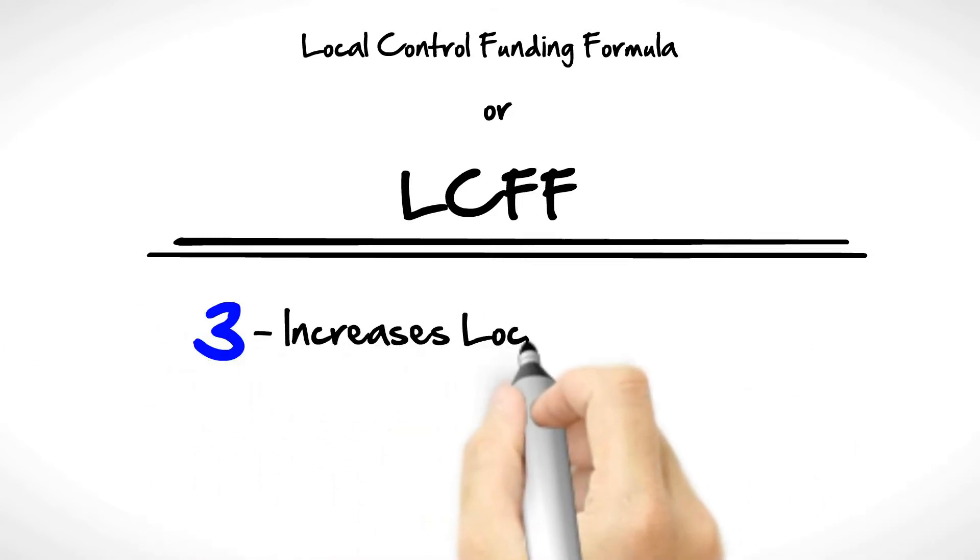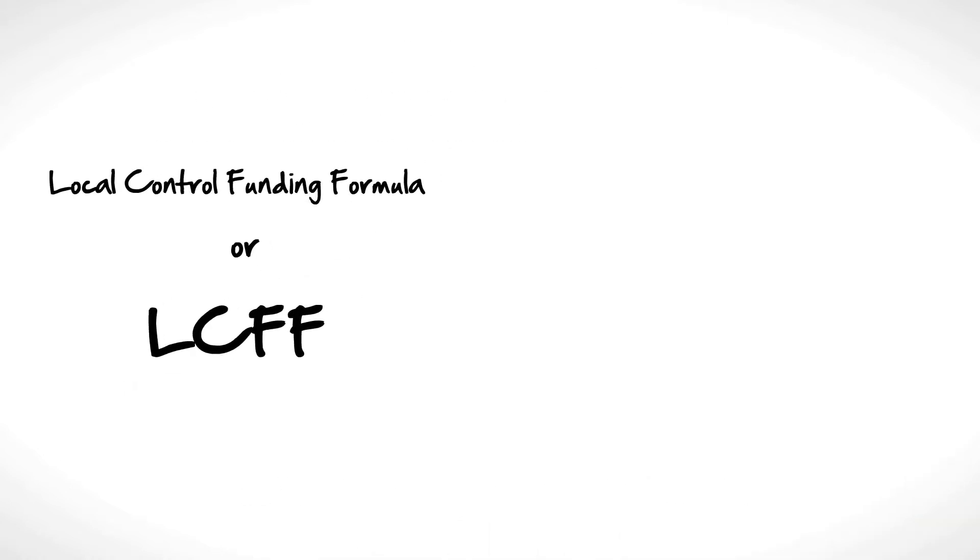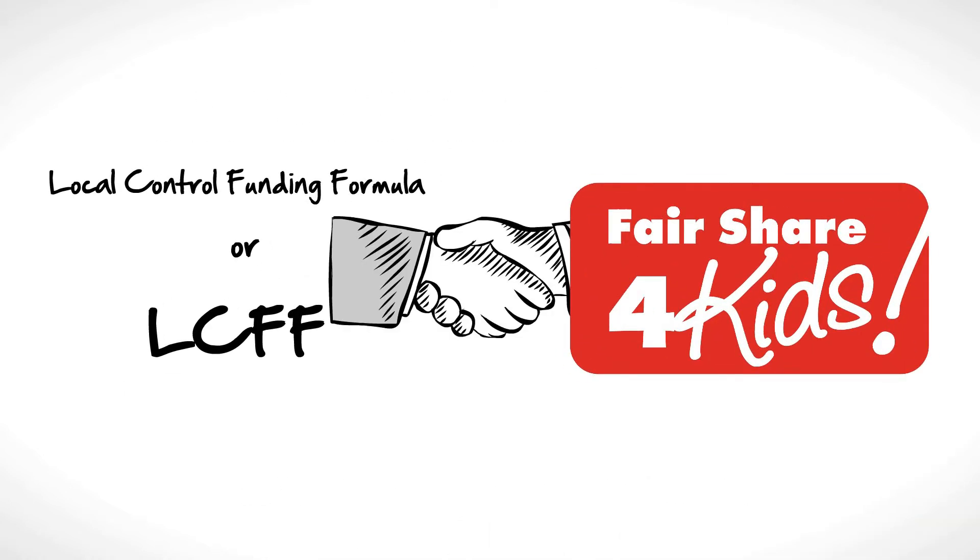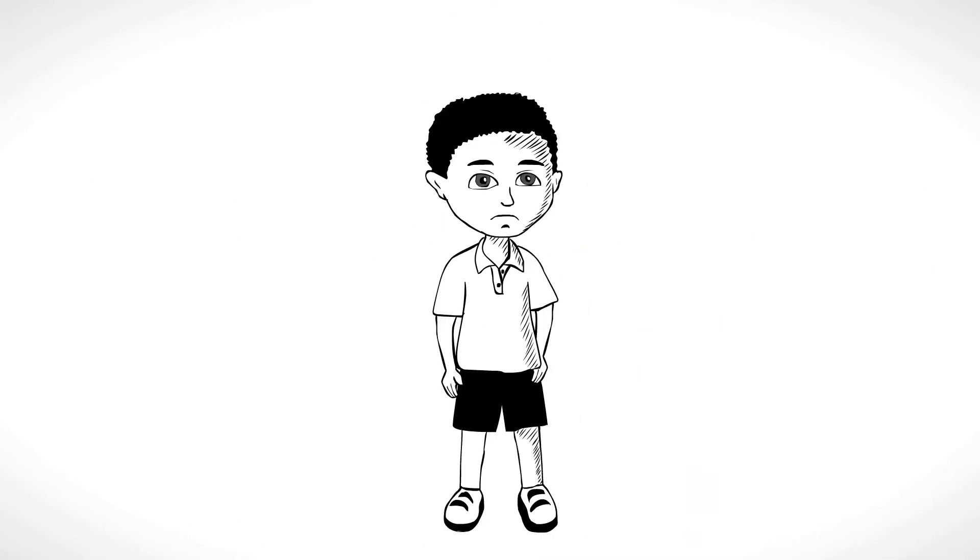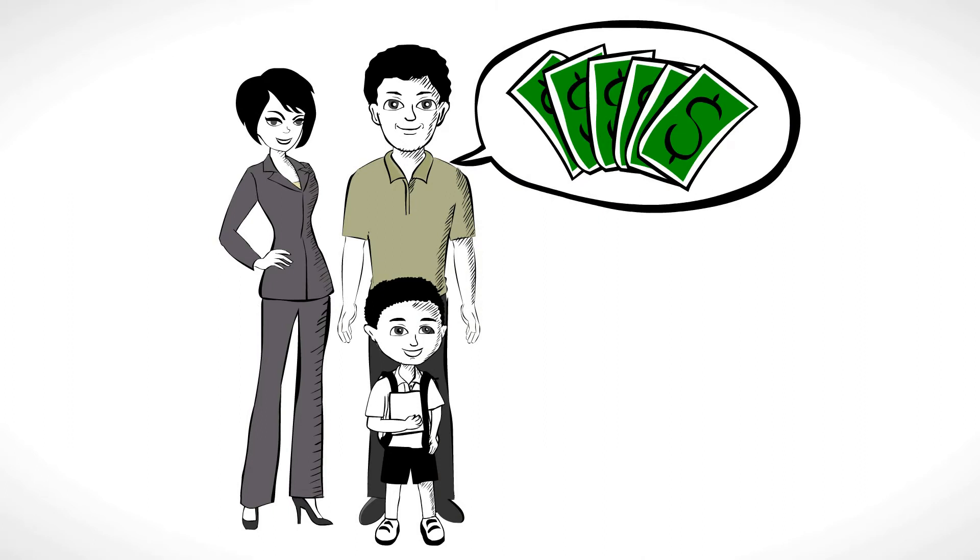3. Increases local control, giving local school districts more options on how to best use funds. Fair Share for Kids supports this plan so long as low-income students receive the support they need and parents have a voice on how monies are spent.